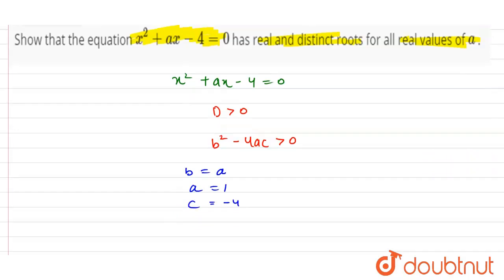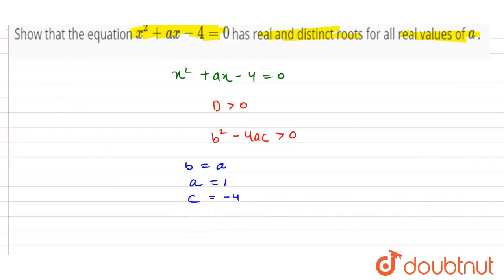Now we put these values in the equation b squared minus 4ac. So the equation can be written as a squared minus of 4 into 1 into minus 4 greater than 0.